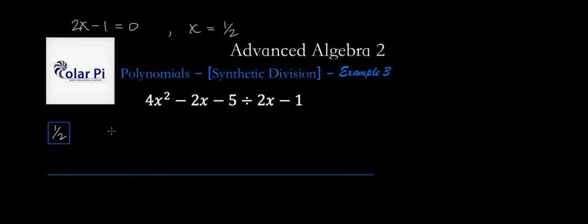We write the coefficients of the polynomial we're dividing in the order they should appear, so that means a 4 here, and then a negative 2 here, and then a negative 5 here.